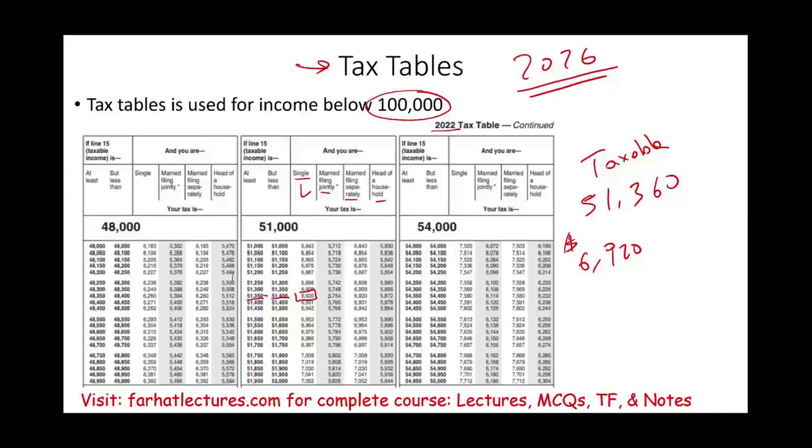If you are married filing jointly, married filing separately, or head of household, you will have a different tax amount.